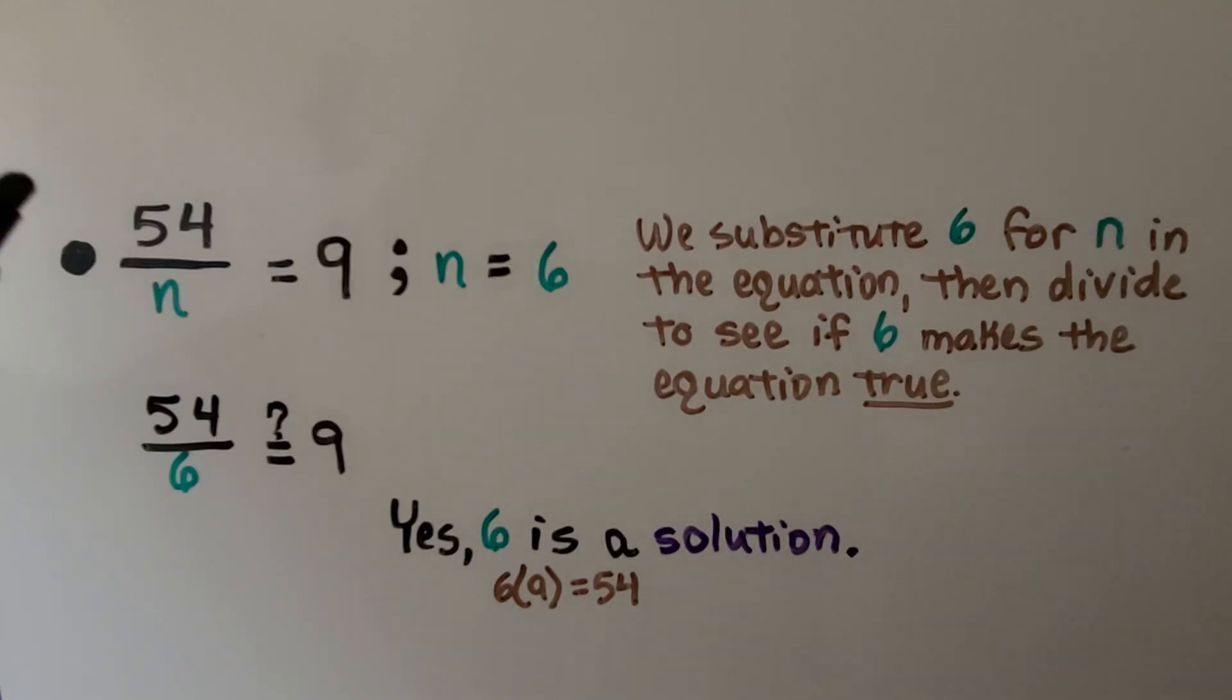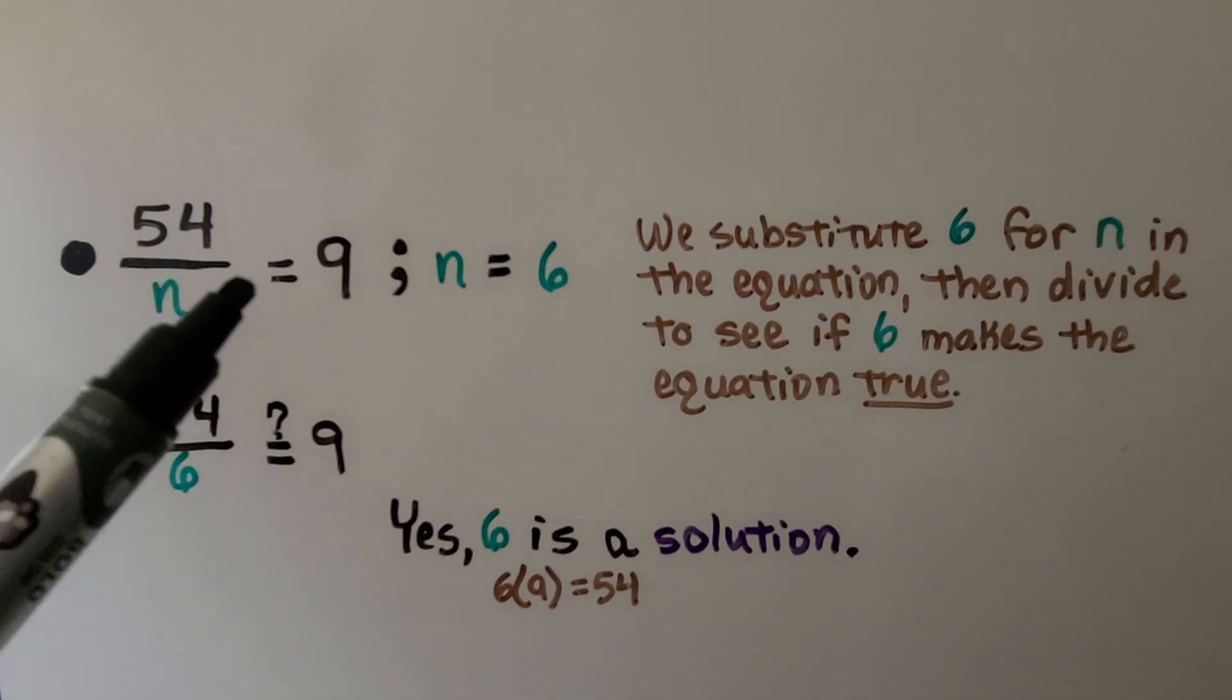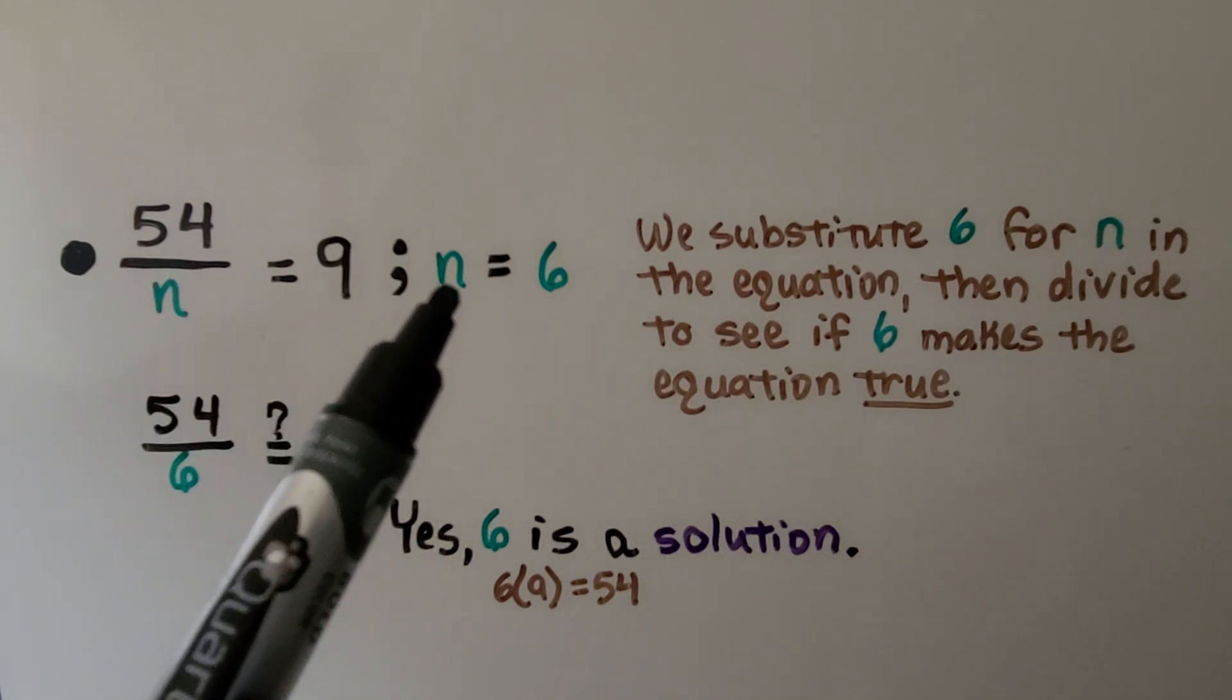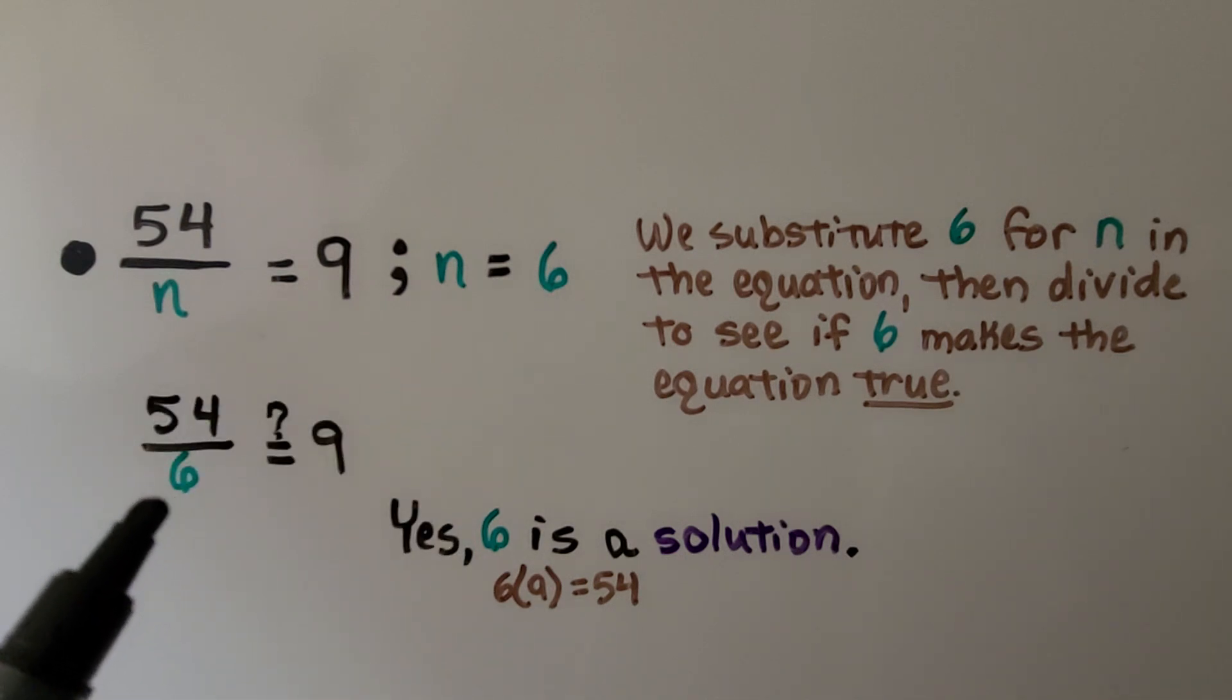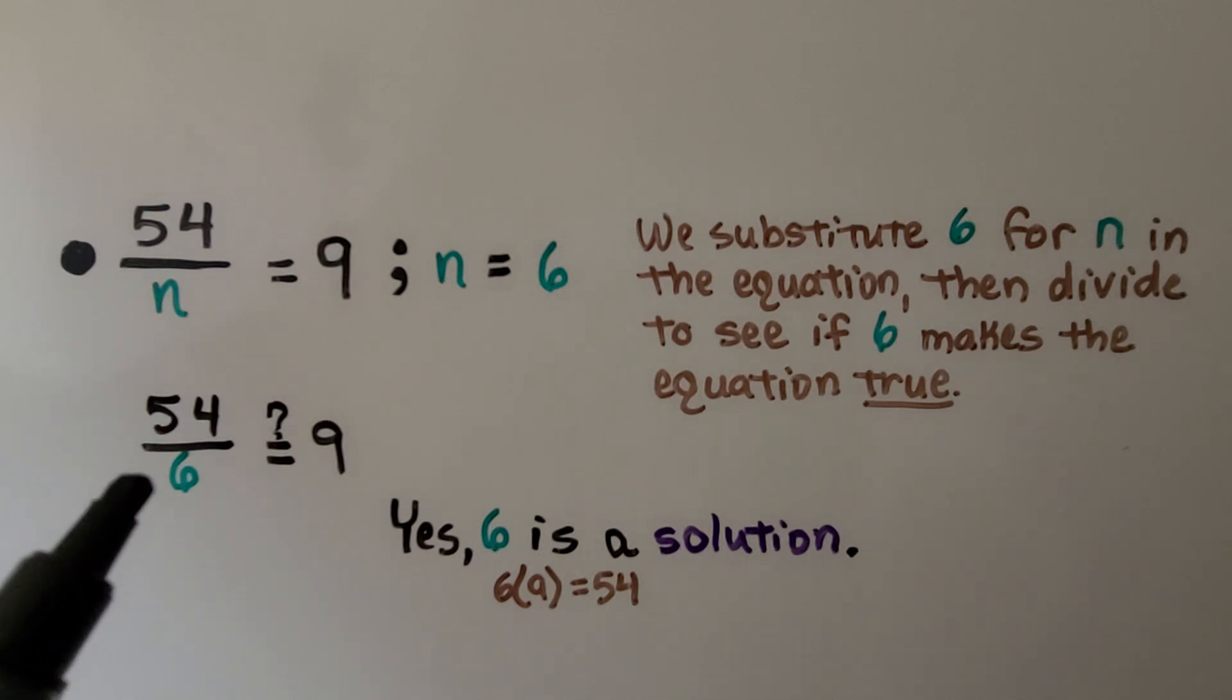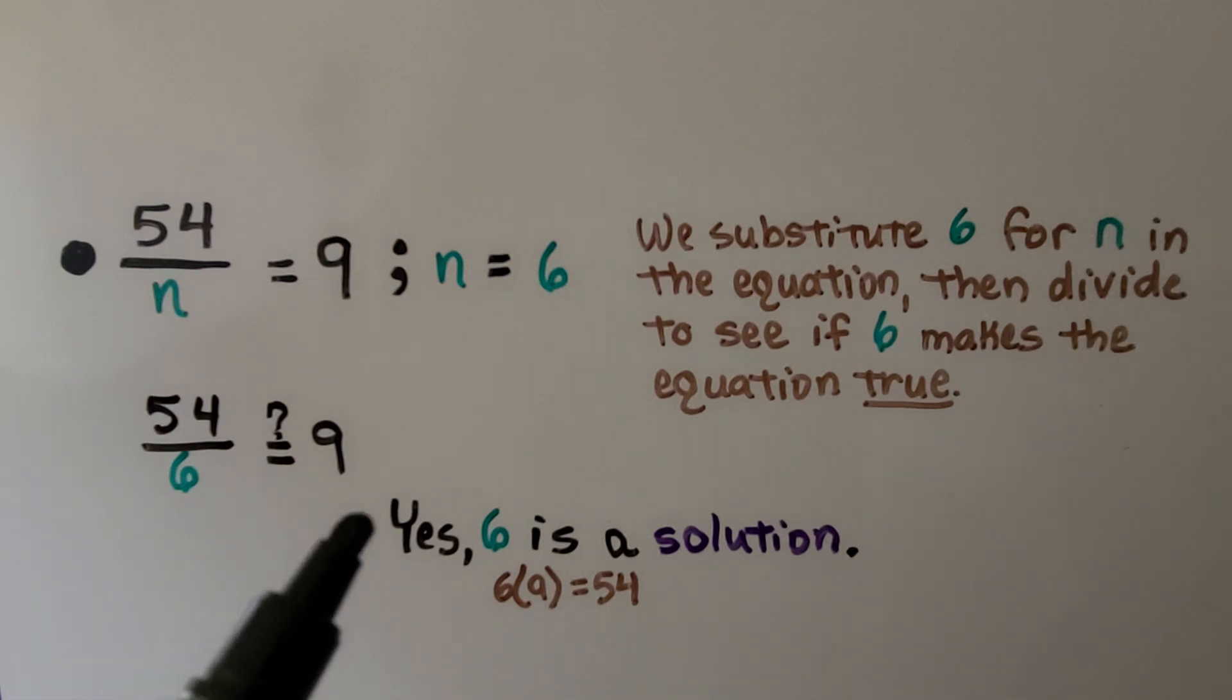Here we have fifty-four divided by n is equal to nine, and it's given that n is equal to six. We substitute six for n in the equation, then divide to see if six makes the equation true. Fifty-four divided by six is equal to nine. Yes. Six is a solution. Six times nine is equal to fifty-four.